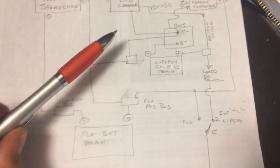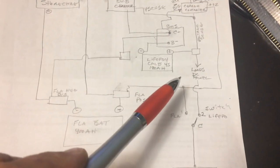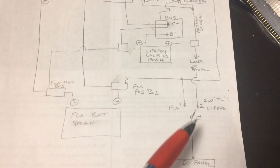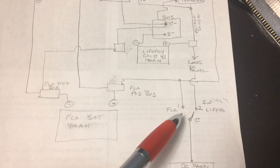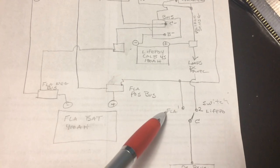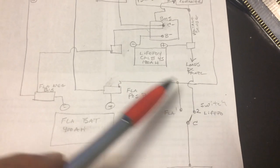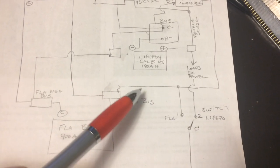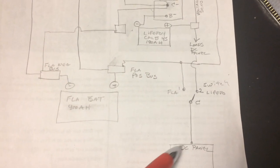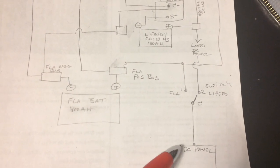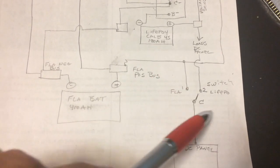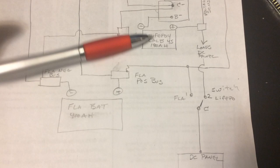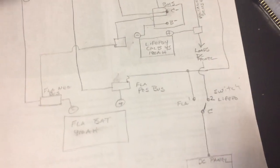So what I do is then I just have a switch that switches between flooded lead acid and the LiFePO4 battery. I just have a switch and then that basically runs my DC panel. I select whether I want to do LiFePO4 or whether I want to do flooded lead acid. Anyway, I hope this helped.